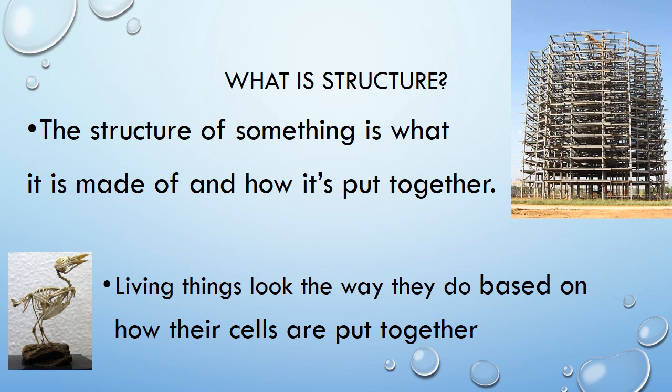The next word we come to is 'structure.' The structure of something is what it is made of and how it's put together. You can think of the structure of your house, our school, any other building, your car, or even a phone. Living things look the way they do based on how their cells are put together. Birds look different than humans, and both look different than bugs, because our cells are arranged in different ways.